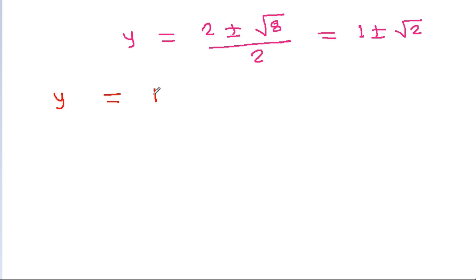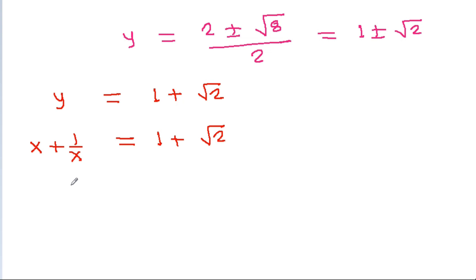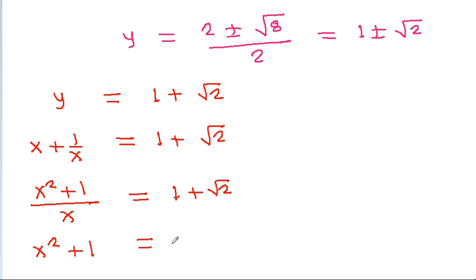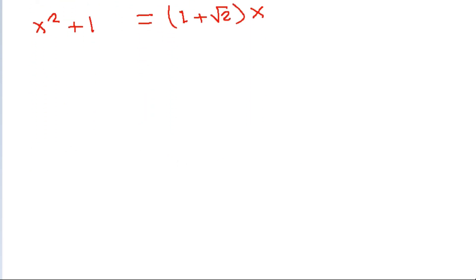If y = 1 + √2, then x + 1/x = 1 + √2, which gives x² + 1 = (1 + √2)x, so x² - (1 + √2)x + 1 = 0.